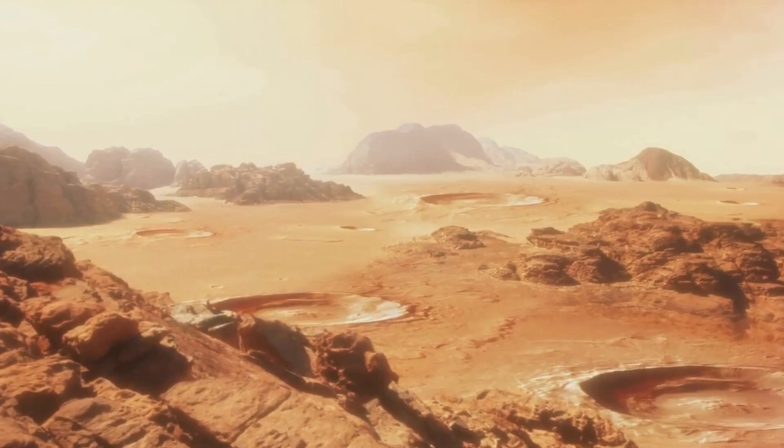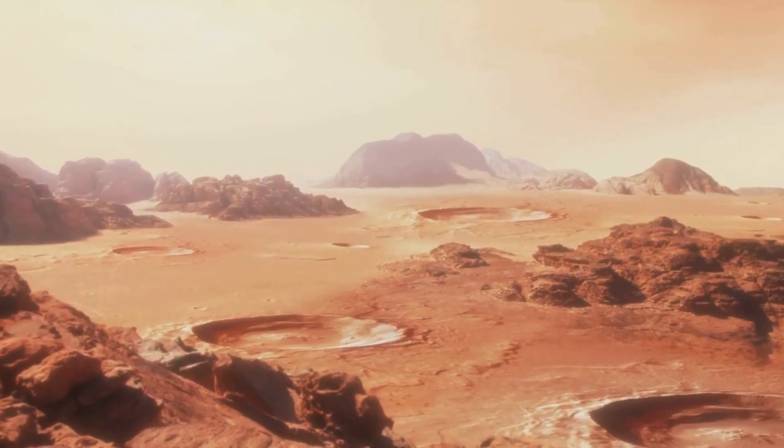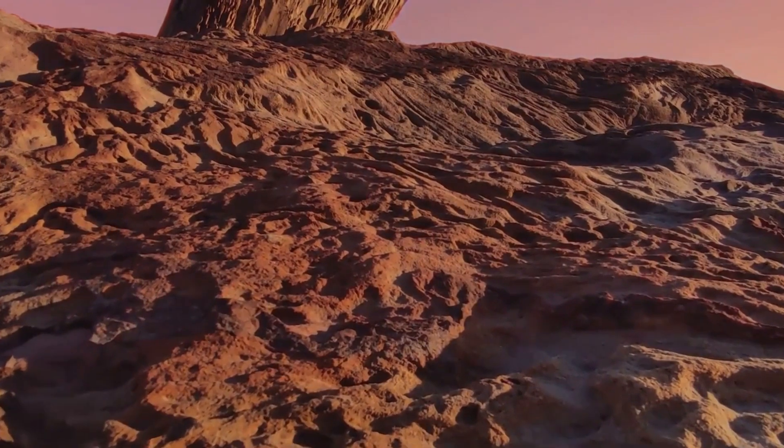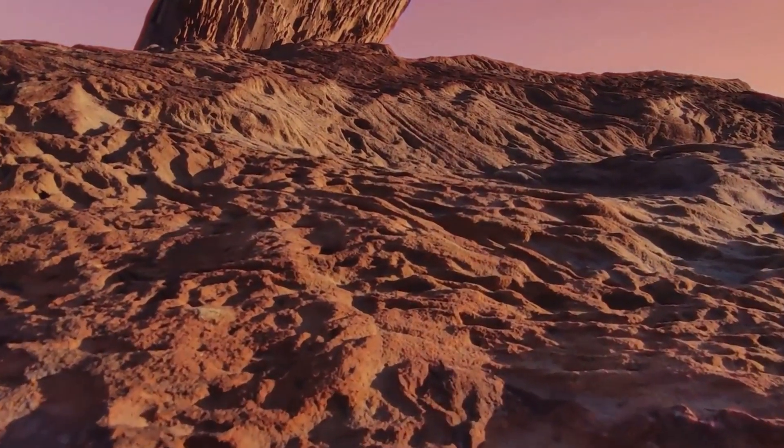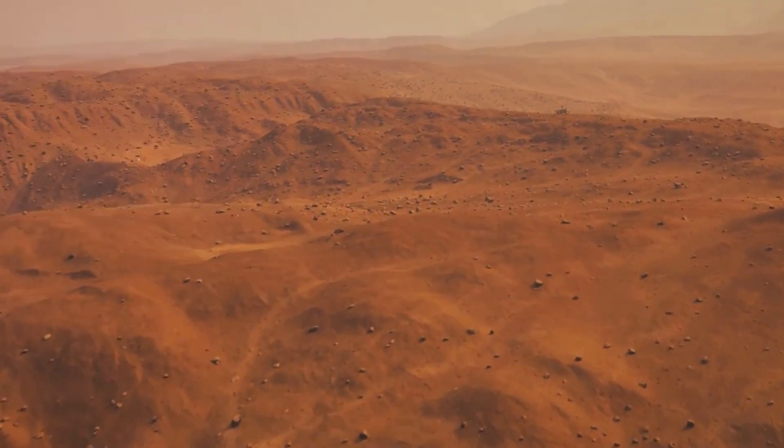Mars, the fourth planet from the Sun, was not always the barren red landscape we know today. It was once a world teeming with potential, a place where water flowed freely across the surface, pooling into vast oceans and winding rivers. The possibilities for life as we understand it seemed endless.